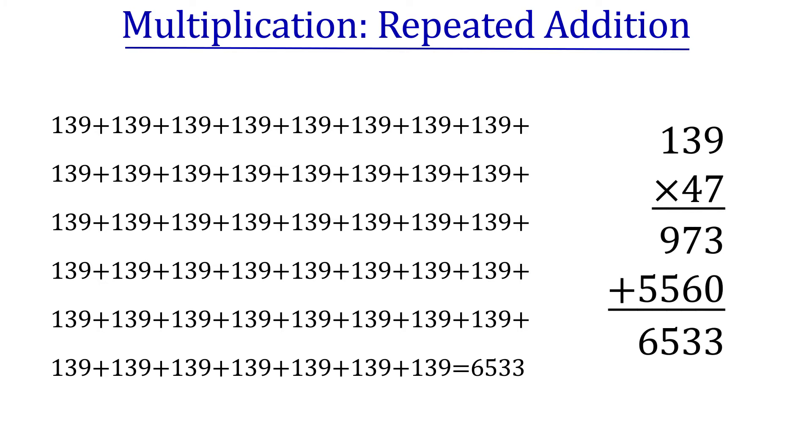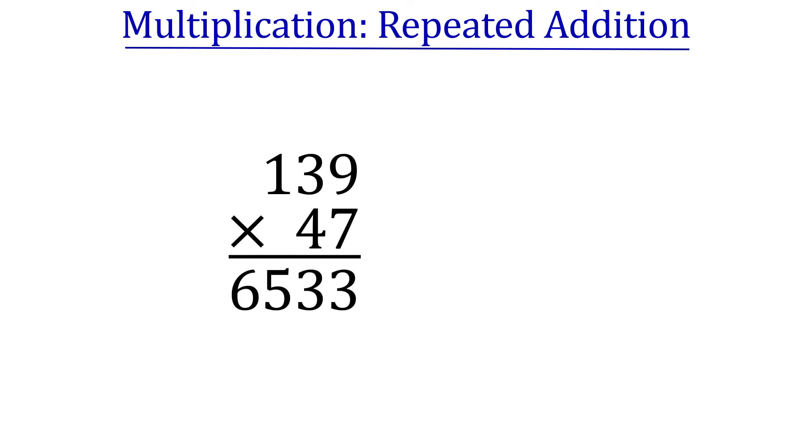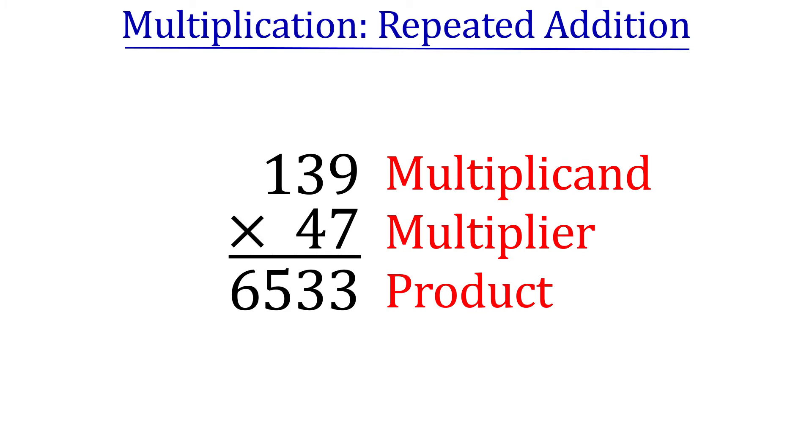First, let's identify the parts of multiplication problems. The first number is the multiplicand. This is the number that is going to be added repeatedly. The multiplier tells us how many times we are going to add the multiplicand. Finally, the product is the solution. Okay, remember these terms as we are going to be using them a lot.